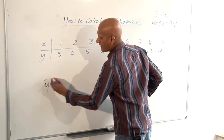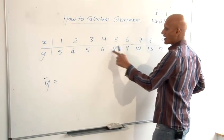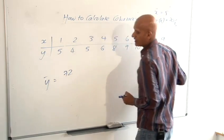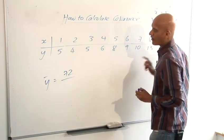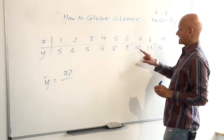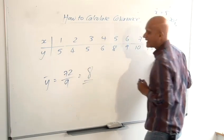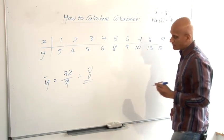So the mean of Y is found by adding up all the Y values, again sticking them in the calculator, you should get 72 as your answer, divided by how many there are, 1, 2, 3, 4, 5, 6, 7, 8, 9 and so the mean of Y is 8 and we also need the variance of Y.